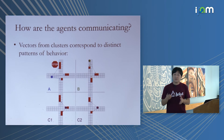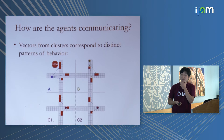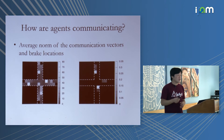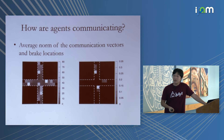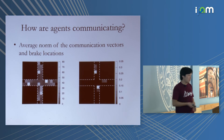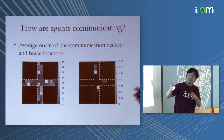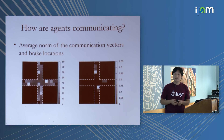Plotting the brake locations shows the car coming from the left never brakes — it just passes through and tells others to brake — while cars from other directions do brake. The norm of the communication vector shows a bright spot at the location where the agent speaks up.